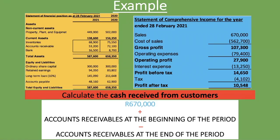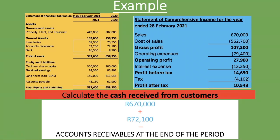Our current period is 2021, so the beginning of the period is the previous year. The accounts receivable at the beginning of 2021 is the same as the accounts receivable at the end of 2020. Going to the current assets section of the balance sheet, accounts receivable — which might also be written as trade receivable or debtors — for 2020 is 72,100 rand. That is our accounts receivable at the beginning of the period.